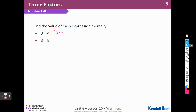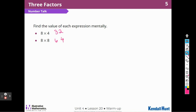8 times 8. We're going to add 4 more 8s to 32, and that is going to be 64. You could also just double 32, because we doubled 4 so we double 32. There are two ways to do that one.